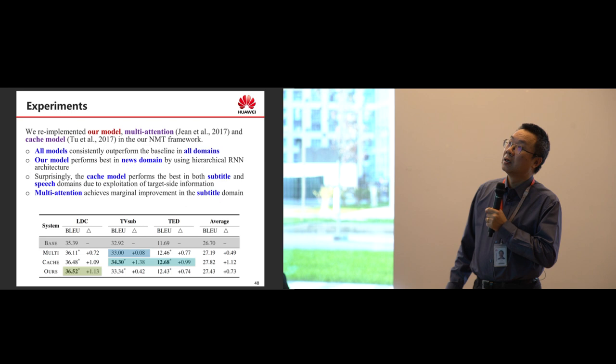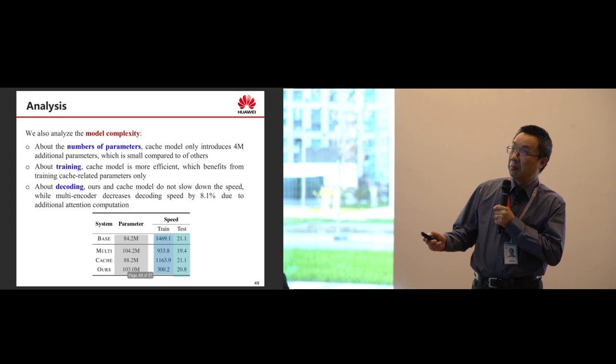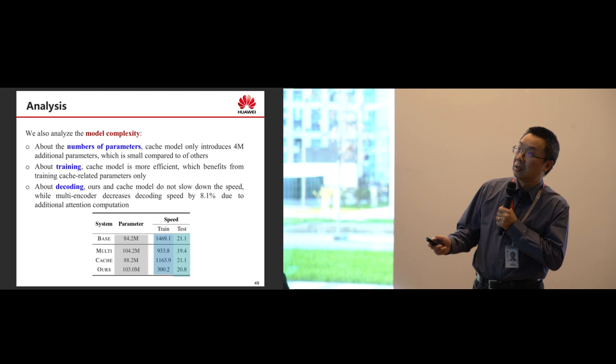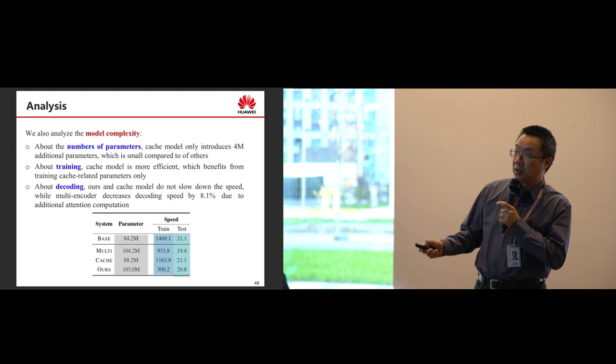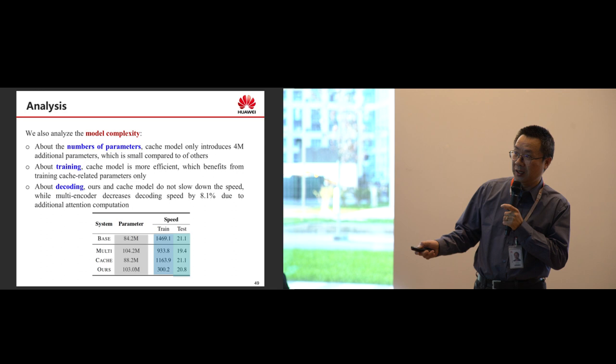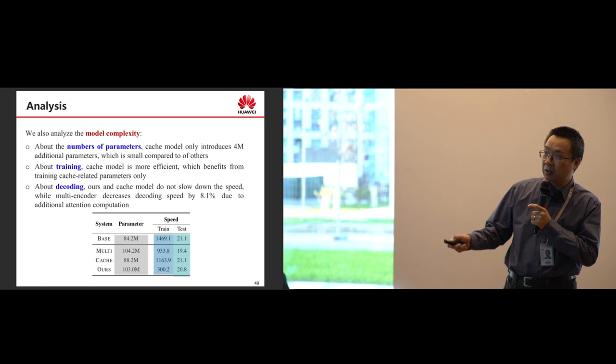This is a comparison of model complexity. The cache model is the smallest and fastest model — it is only a little bit slower than the baseline in training. Our model is much slower in training. But for testing, all models work similarly.